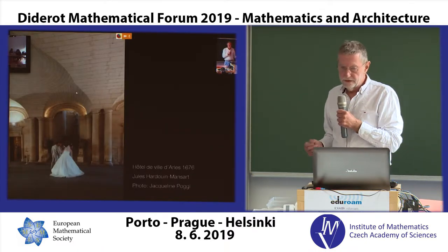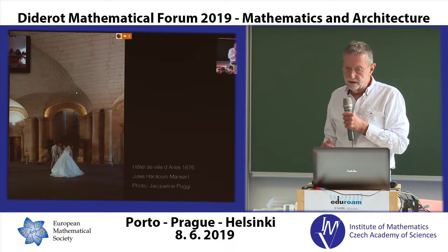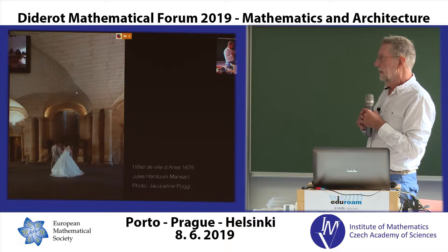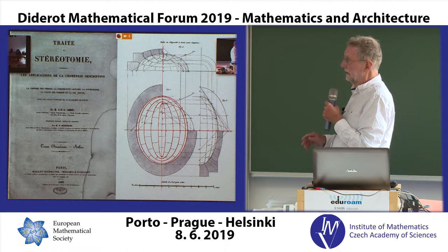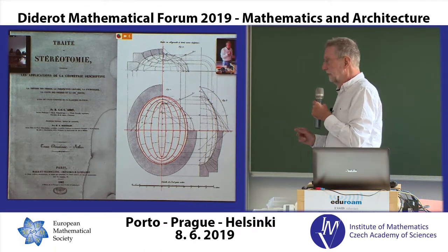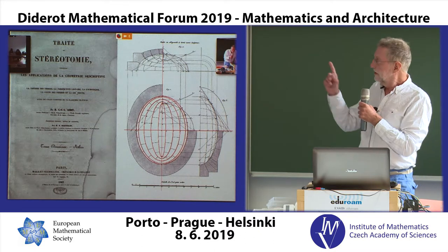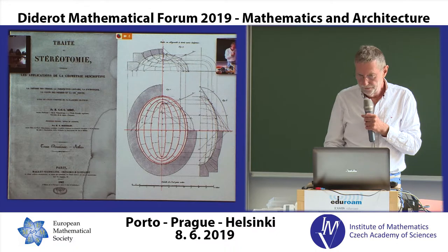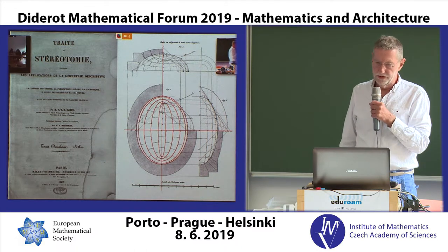I'm now going to step back in time and talk about something more from the era of Diderot. This is the Hôtel de Ville in Arles, from the 17th century — before Diderot — which is generally considered to be one of the greatest examples of what's called stereotomy, the geometry of cutting stones to form vaults. There are many books on stereotomy going back to Philibert de l'Orme in the 16th century. This example from Diderot shows an ellipsoidal vault which uses a system of joints between the stones that follow the lines of principal curvature on the surface.